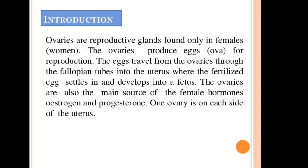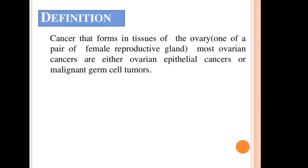The ovaries are also the main source of female hormones — estrogen and progesterone. One ovary is on each side of the uterus. Now, the definition: cancer that forms in the tissue of the ovary, which is a pair of female reproductive glands.